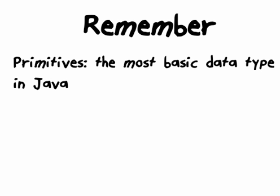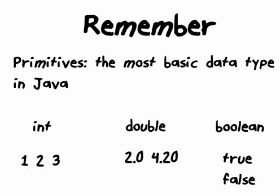Remember that primitives are the most basic data type in Java, which include int, double, boolean, and many more.